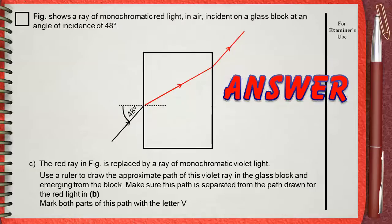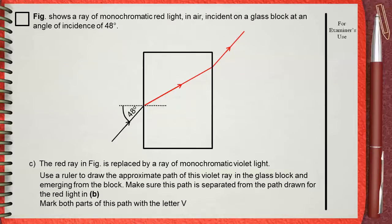In this case, the same will happen. But the difference between the violet ray and the red ray is that violet will break towards the normal more than the red. Then, when this violet ray emerges from the block, it will do the same. It will bend away from the normal.